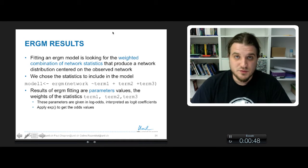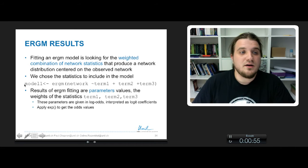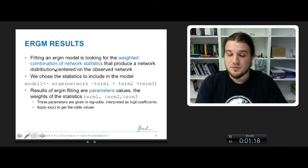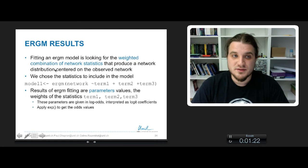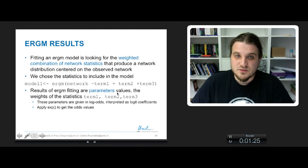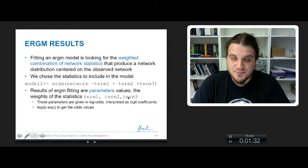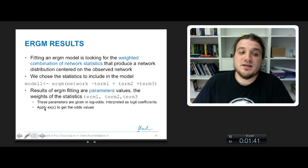We choose the statistics to include in the model based on our intuition, insights, and hypotheses to verify. In R, we type a line where our model will be an ERGM model of an observed network that we want to explain by term 1, term 2, and term 3. The function does all the work for us and returns parameter values - the weights of the statistics. These parameters are given in log-odds that we interpret as logit coefficients. To obtain the odds values, we apply the exponential function.